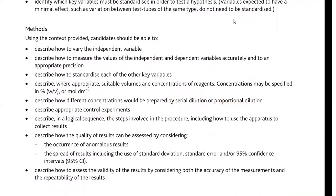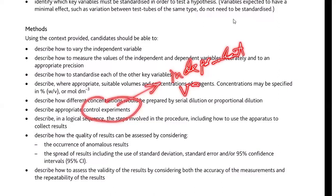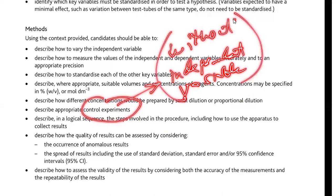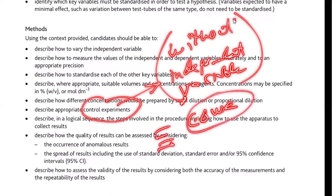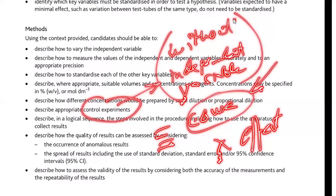A control experiment is one in which we omit the independent variable. The experiment is repeated without the independent variable, in the same conditions of all the control variables. So you have subtracted the cause. When the cause is not there, the effect will not be there either. We can therefore safely say that whatever change is occurring in our experiment, and the change not occurring in the control experiment, is mainly because of the independent variable — the cause.